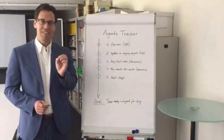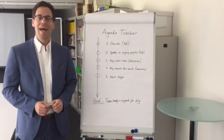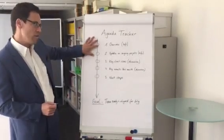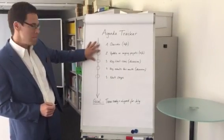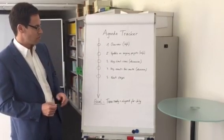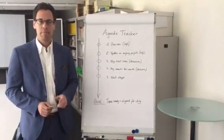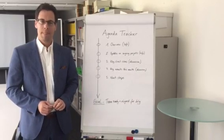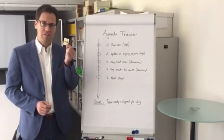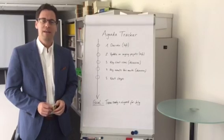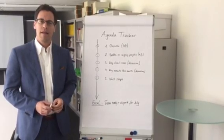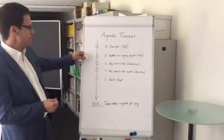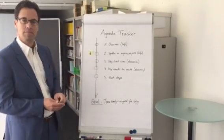It helps people to signal what they want to discuss and how to discuss it. Here's how it works. Let's say you have visualized the agenda of the meeting on an agenda tracker chart like the one we have here. But you don't know where to focus and for how long. Distributing small sticky notes to your colleagues can solve that problem. You ask them to place a sticky note next to the item that interests them most.